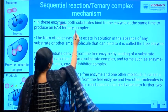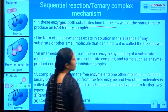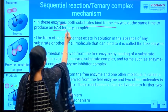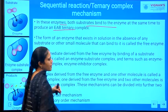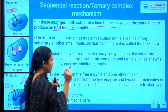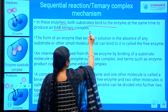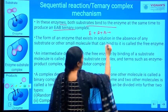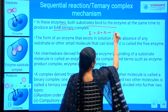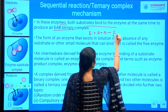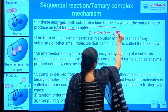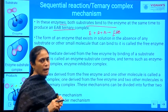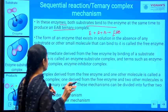In these enzymes, both the substrates bind to the enzyme at the same time to produce an EAB ternary complex. There will be one enzyme and two substrate molecules going to bind the enzyme in order to form a ternary complex. So both the substrate molecules are going and binding to the enzyme at a time.